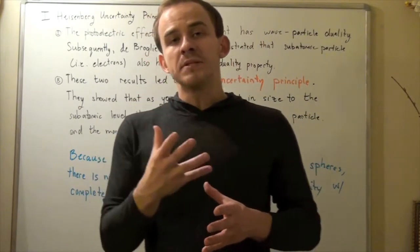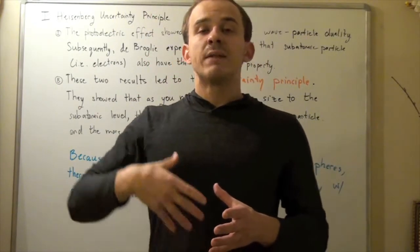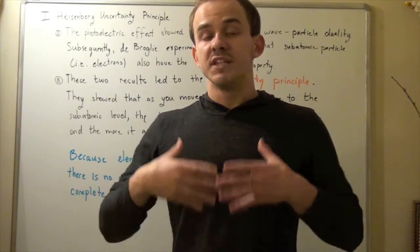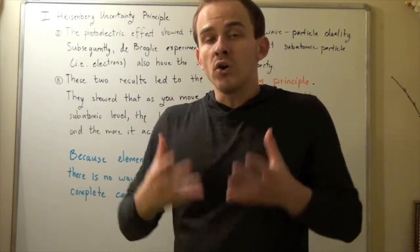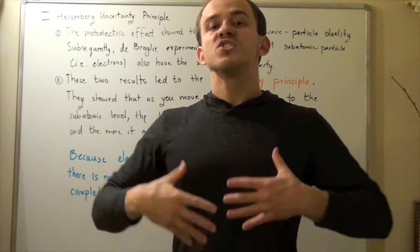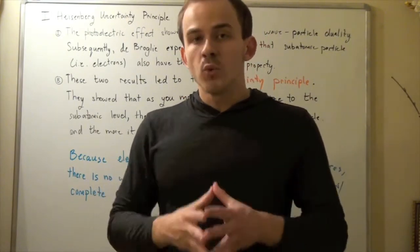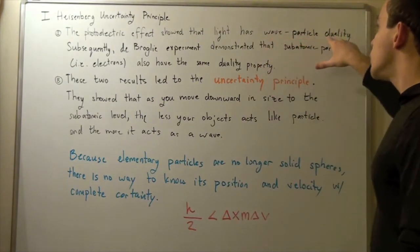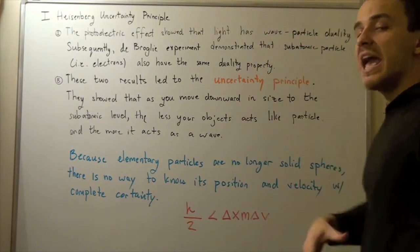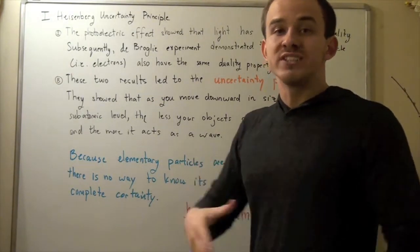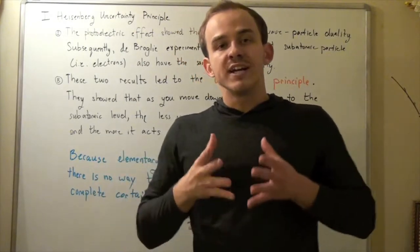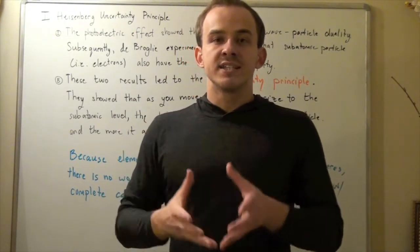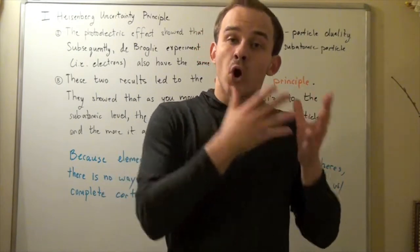This experiment was conducted by Einstein, and what Einstein showed was that light, an electromagnetic phenomenon, had both particle-like properties as well as wave-like properties. In other words, light has the property called wave-particle duality. What this property tells us is that whenever it's convenient, light can act as a wave, and whenever it's convenient, light will act as a particle.